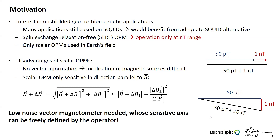Scalar OPMs are only sensitive in the direction parallel to the background field. If we operate in Earth's magnetic field of about 50 microtesla and want to measure an anomaly of one nanotesla: if the two vectors are aligned, the scalar value changes by exactly one nanotesla. But if they are perpendicular, I measure only a change of 10 femtoteslas, suppressed by the background field via a Pythagoras-like equation.